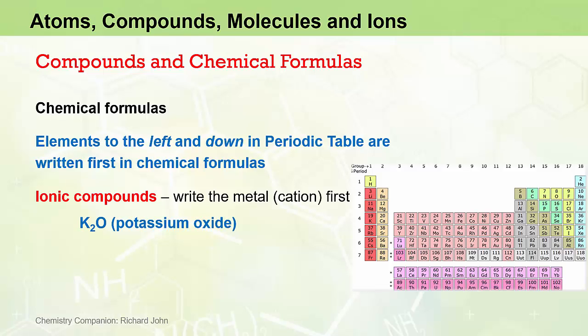Here we see the chemical formula for potassium oxide, K2O. We can see from the periodic table that potassium sits on the left-hand side of the periodic table, and oxygen sits over on the right-hand side. So we write the metallic potassium element first.